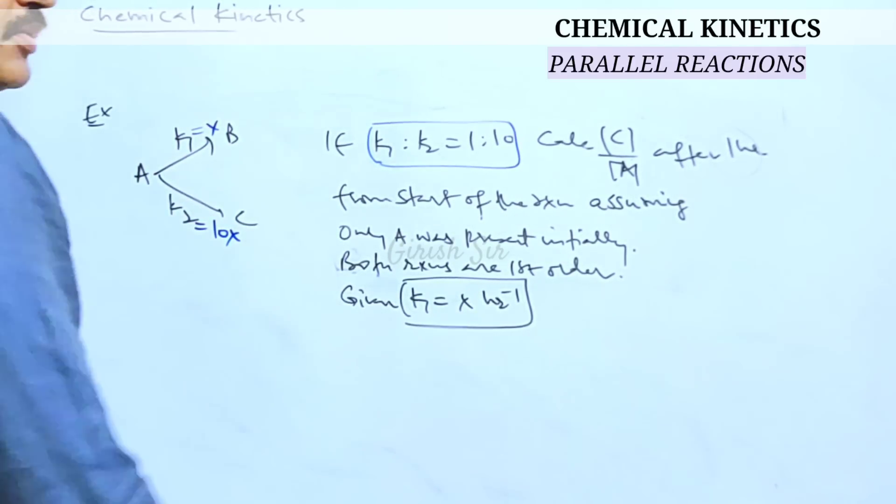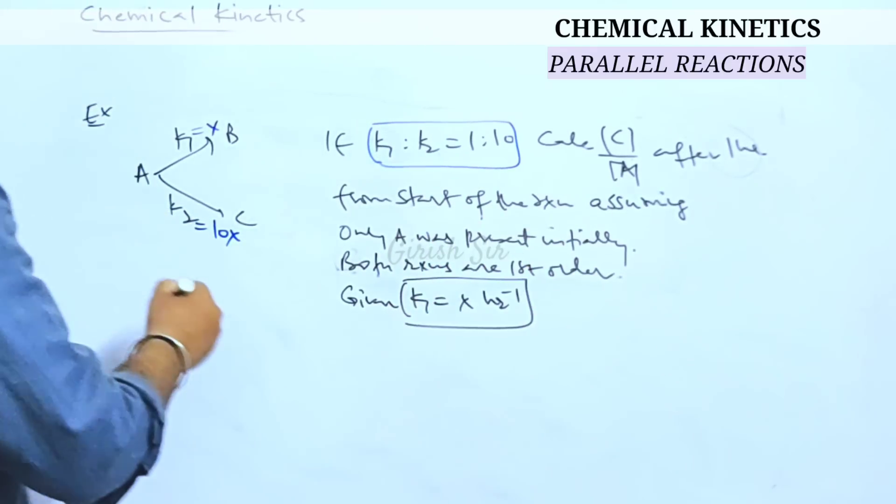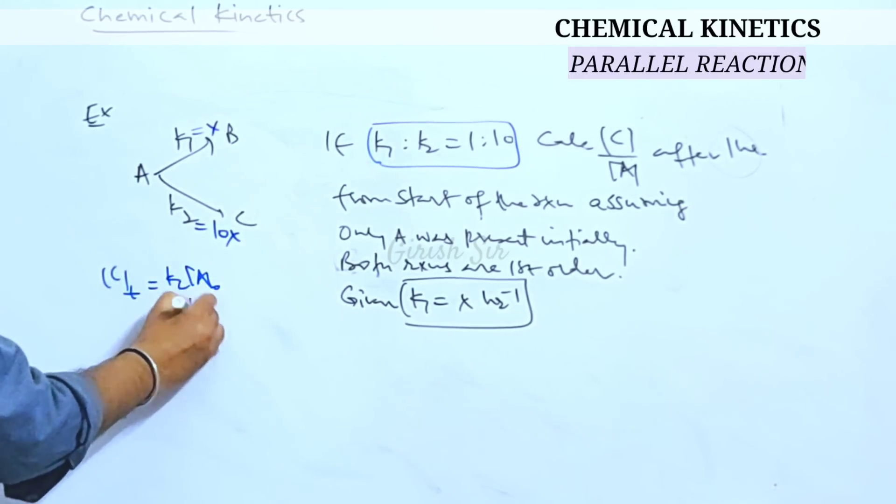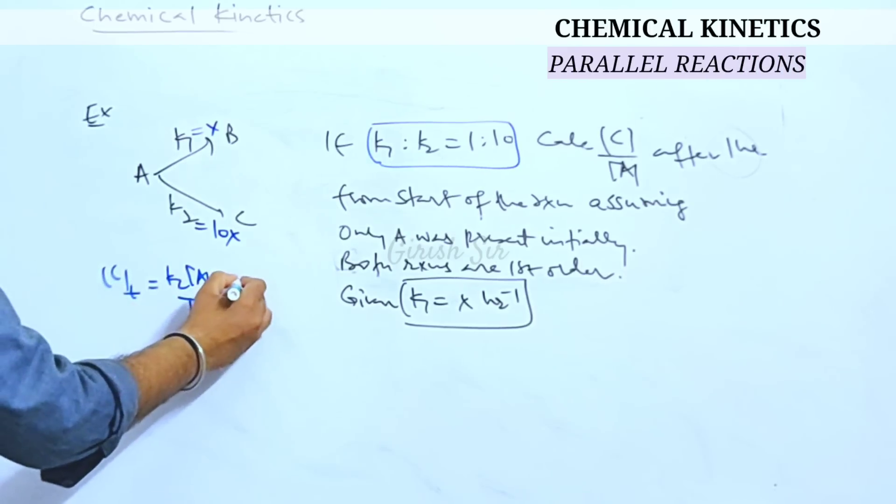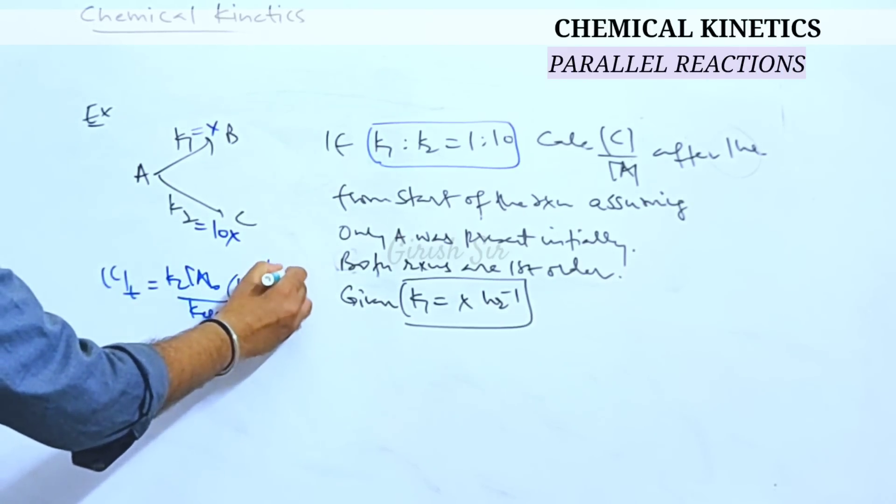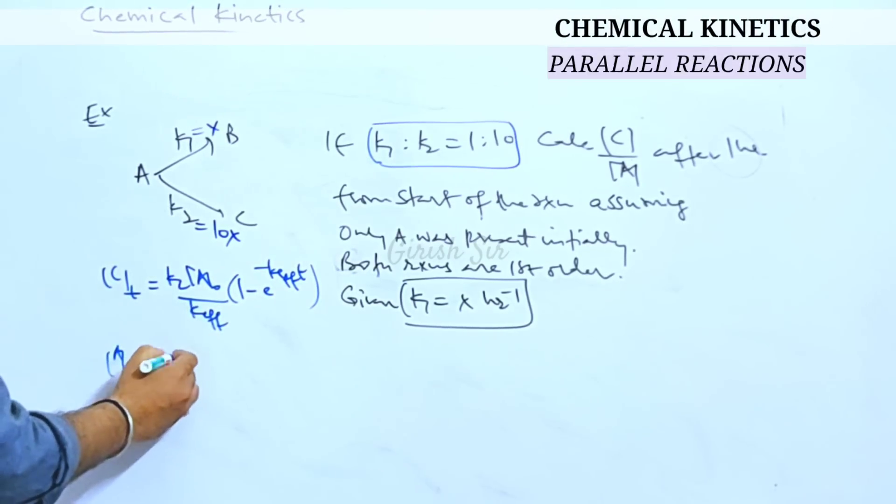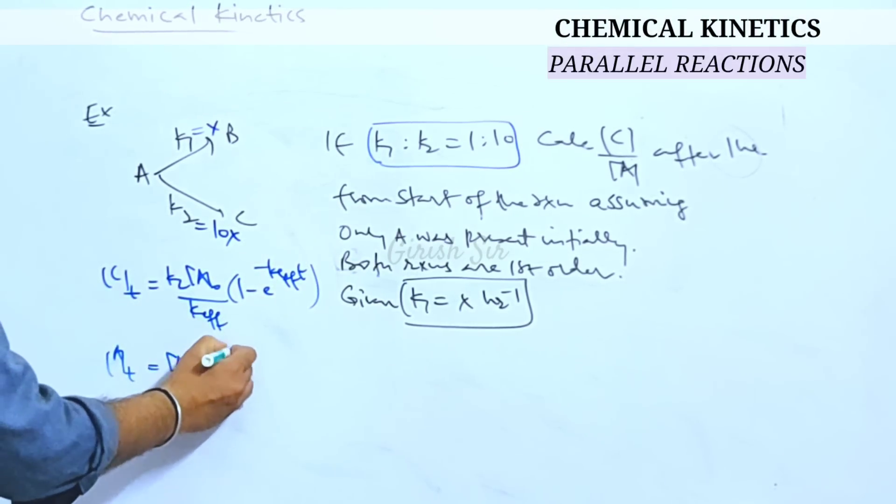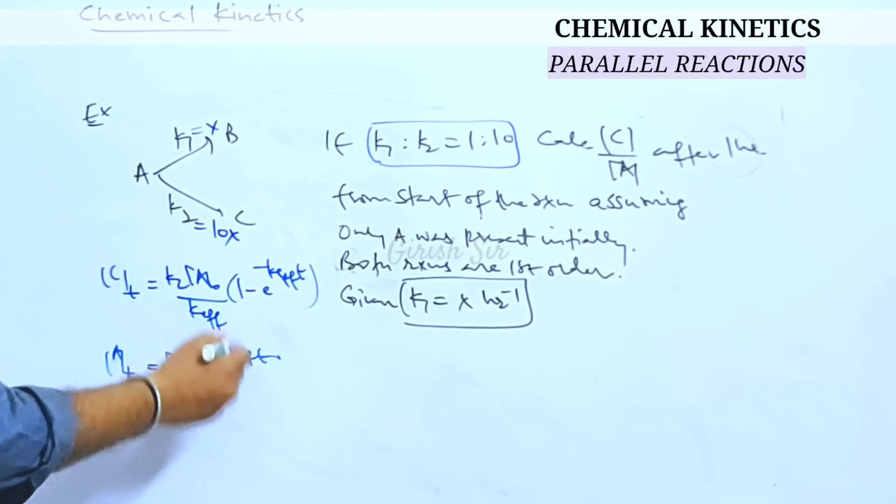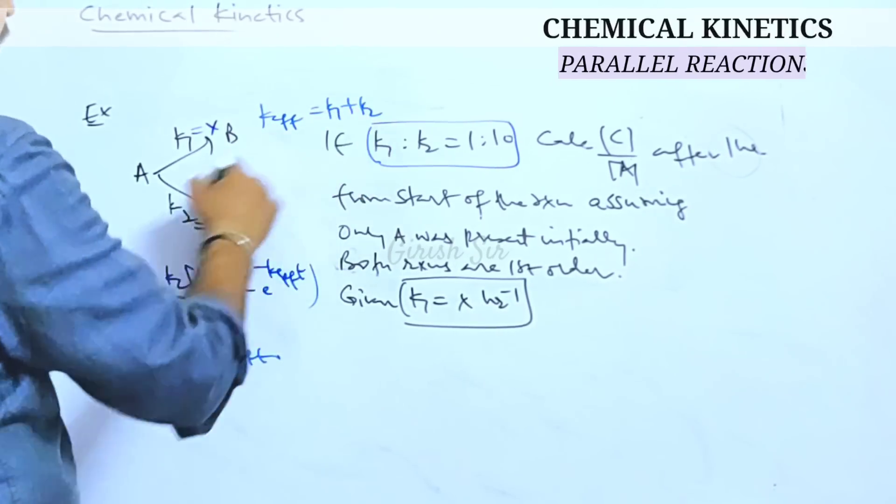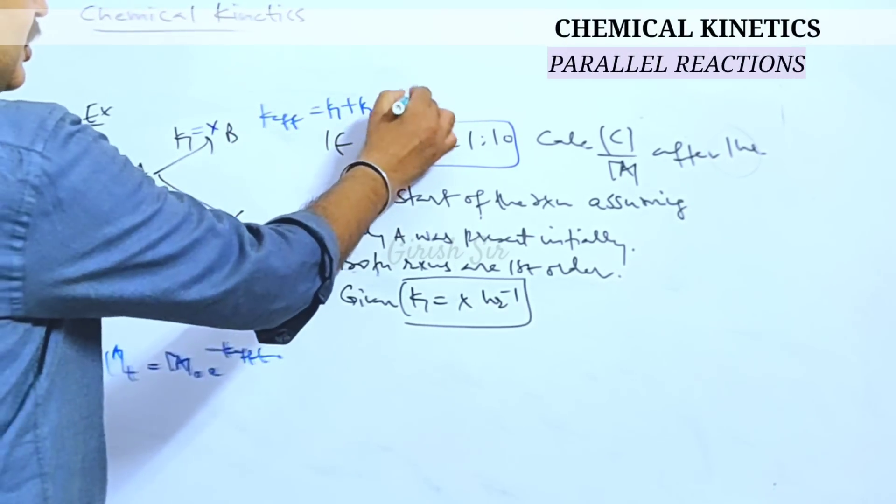Now question says find ratio concentration of C and A after one hour. Now if you remember the results as we did concentration of C after some time is given as K2 into A0 upon K effective. Here K effective which is the sum of rate constants for the two reactions would be 11x.